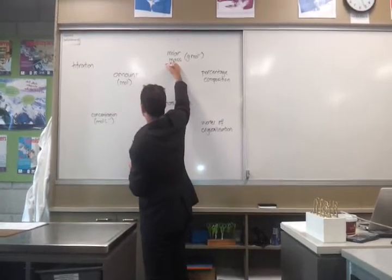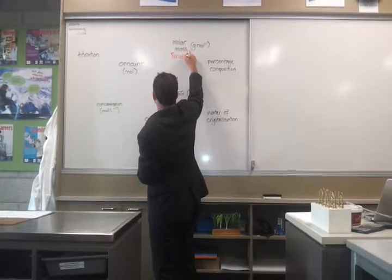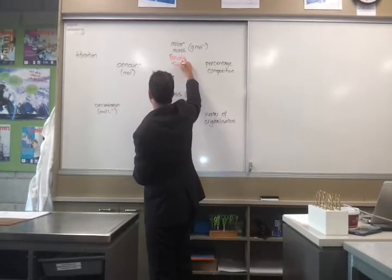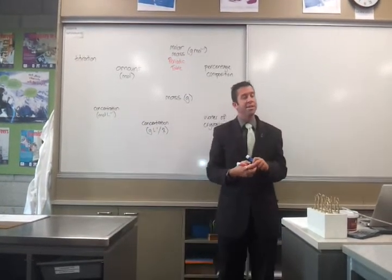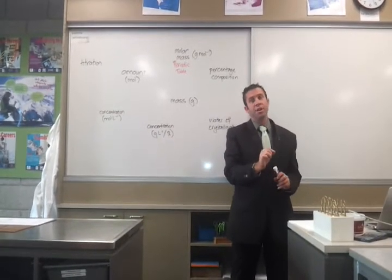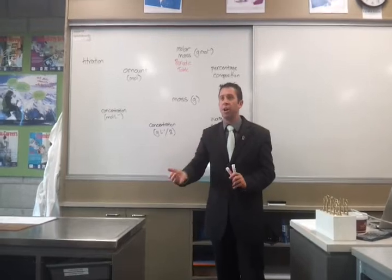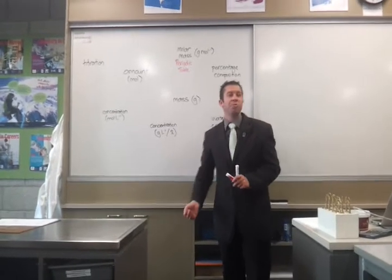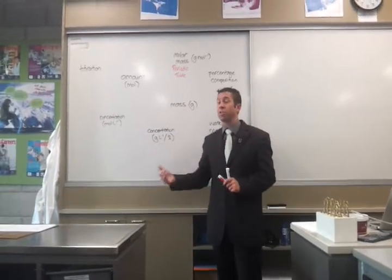So we find the molar mass from the periodic table, and we use a thing called the relative molar mass, or relative molecular mass. That's those numbers with the decimal places after them. So for chlorine, I hope I've got this one right, 35.45 would be the molar mass of a chlorine atom.